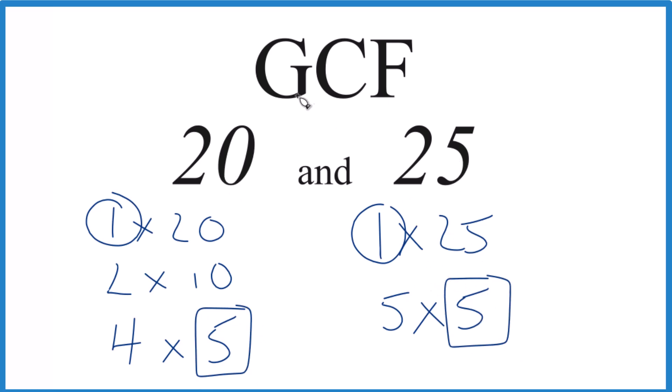So in answer to our question, the greatest common factor for 20 and 25 is 5. You could also use prime factorization to do this, but I think for these smaller numbers, this works a little bit better.